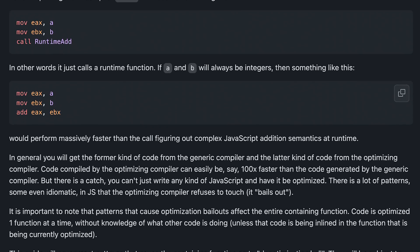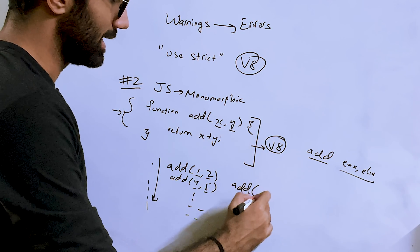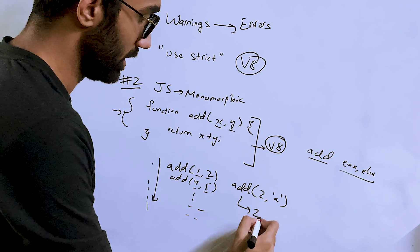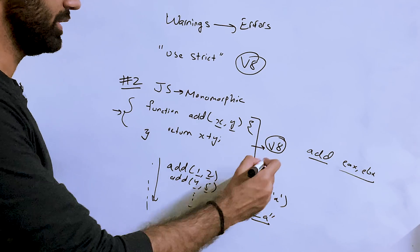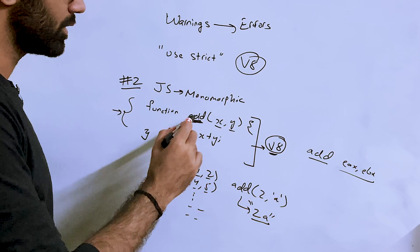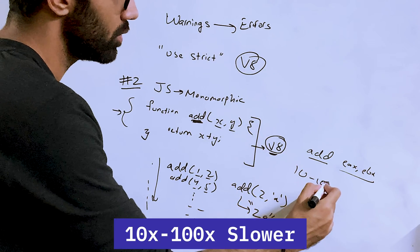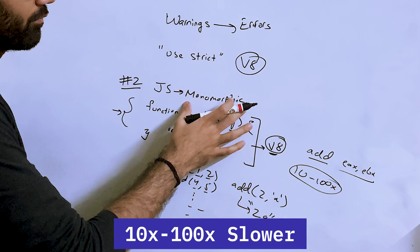But what happens if you start calling it in a way like add(2, 'a')? Then, of course, you know JavaScript will return you '2a' as a string. But the moment you do this, the V8 engine internally de-optimizes this function. That means this function would now run much slower, in fact 10 to 100 times slower for some cases.